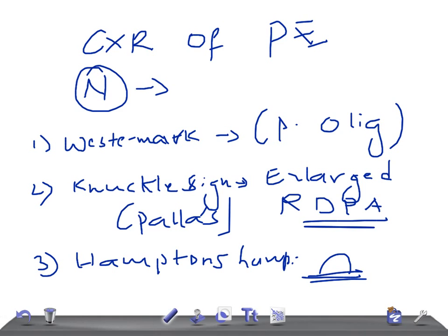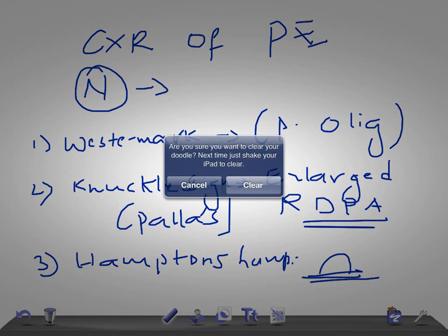Then we have another sign known as melting sign. This is really important for USMLE. Melting sign is an infarct that shows rapid clearing in contrast to pneumonic consolidation - it melts like snow.